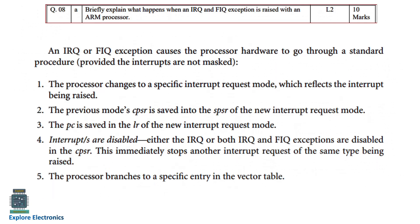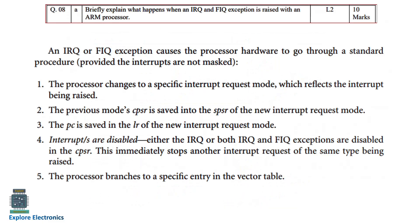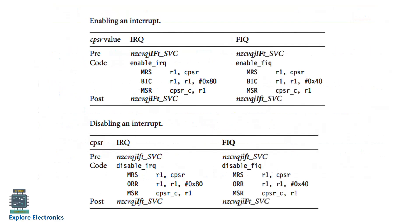The next question is: briefly explain what happens when an IRQ and FIQ exception is raised in an ARM processor. The standard procedure when interrupts are not masked is described, along with a table indicating how to enable and disable interrupts. You need to explain this standard procedure along with the enable/disable interrupt table.